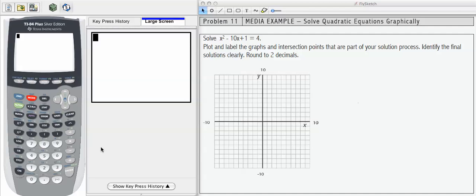In problem 11, we're asked to solve the quadratic equation x squared minus 10x plus 1 equals 4. In our next lesson, we're going to learn algebraic and computational methods for solving quadratic equations. In this lesson, we're going to continue with our graphical process.